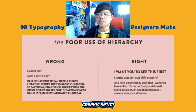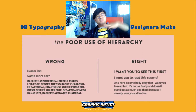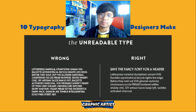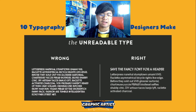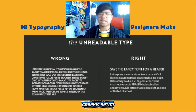Mistake number six: poor use of hierarchy. On the left side, the paragraph is larger and bolder than the header or title, which is wrong. On the right side, proper hierarchy is shown: 'I want you to see this first' is largest, then 'read this second' is smaller, and so on — from top to bottom, the most important element is largest and it decreases in size. Mistake number seven: the unreadable type. When writing a long sentence or paragraph, never use all uppercase letters — it is hard to read. A paragraph should be in sentence case, not all caps.